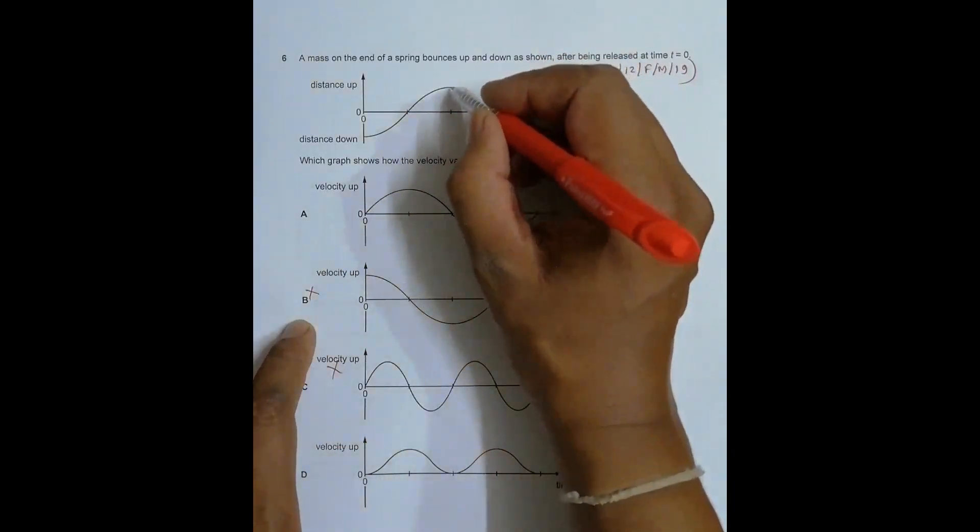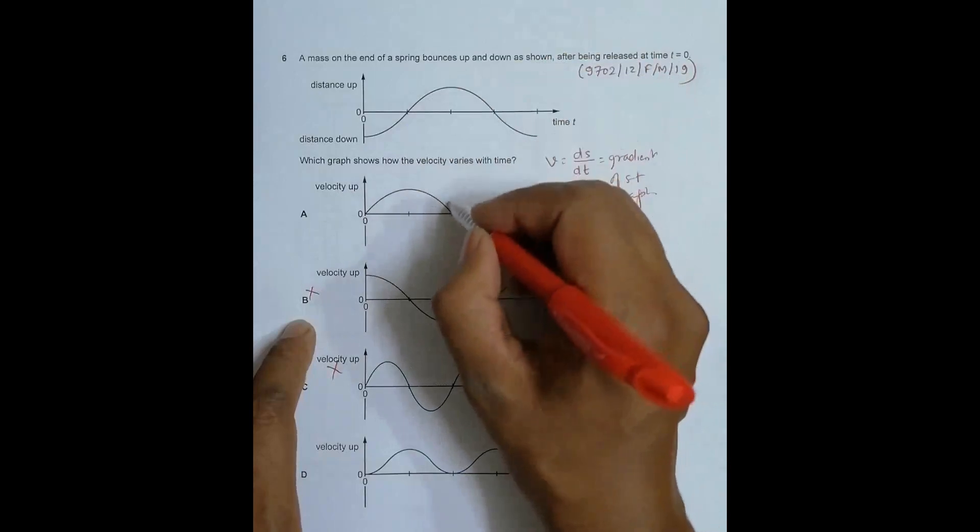At this position we have slope is again zero. Though the value of distance up is maximum, the slope is zero. Slope zero means that the value of v at this point should be equal to zero. So v zero, this qualifies.